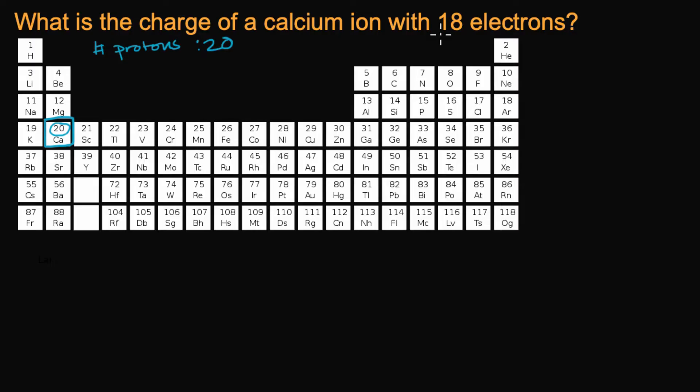And then we know the number of electrons is 18. That's negative charge. So I'll just write it here, number electrons. I'll abbreviate it right over there. That is 18. And this has negative charge.